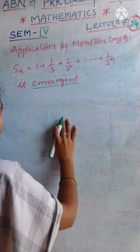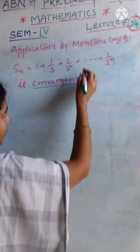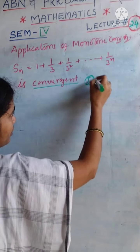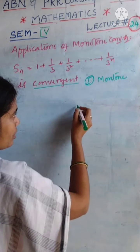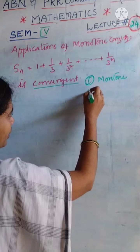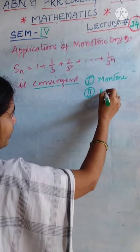To prove this sequence is convergent, to apply Monotone Convergent Theorem, the first case is to prove the given sequence is either Monotone or not. And the second case is about boundedness.